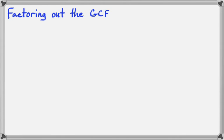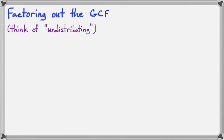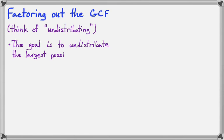In this video, we're going to talk about how to factor out the GCF, or the Greatest Common Factor. What this feels like when you do it is undistributing. So just keep that in mind — think of pulling something back out of the expression and putting it outside the parentheses. We're going to undo that distributing process. The goal is to undistribute the largest factor that we can — that's why they call it the Greatest Common Factor.